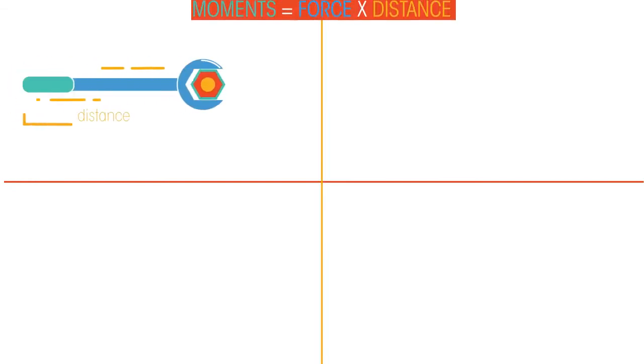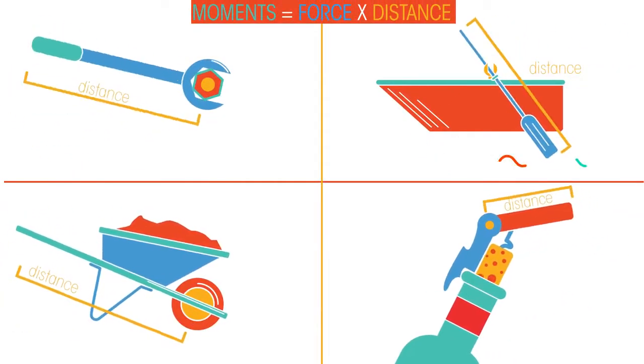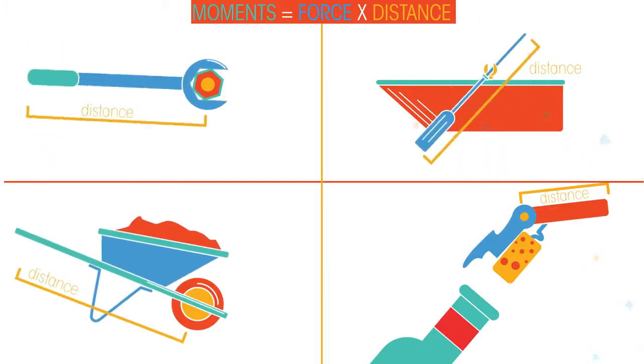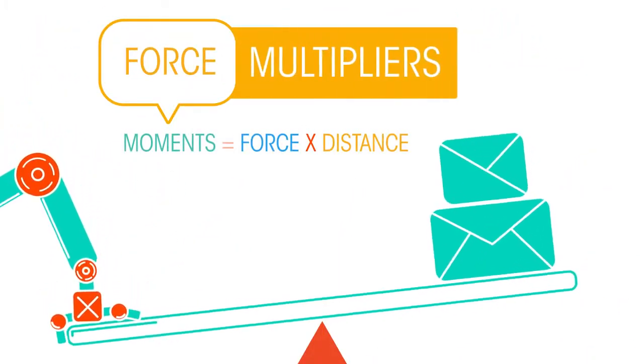Levers are simple machines or mechanisms that make work easier to do. They use moments to reduce the force needed to perform a task. Levers are sometimes called force multipliers.